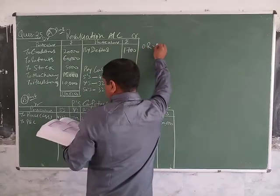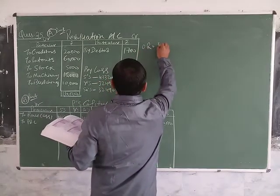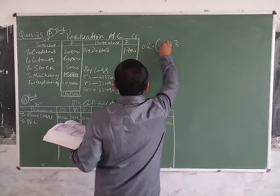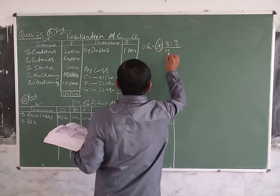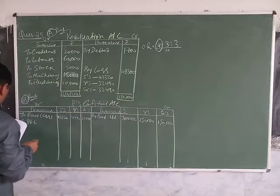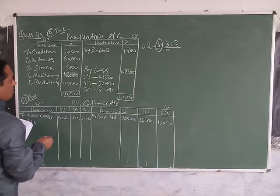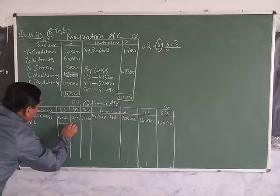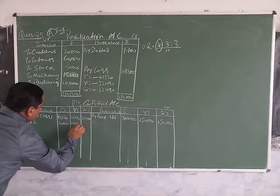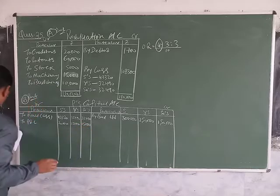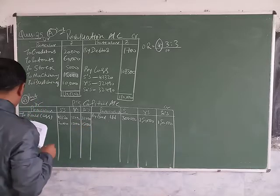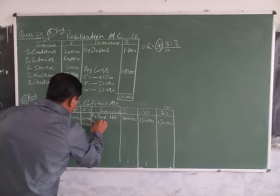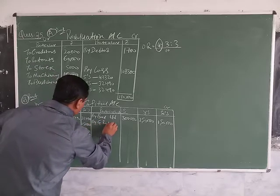The old ratio is 4:3:3. This partner is retired, so the total is 10. The 4/10 share means the distribution of 50,000 is: 4/10 gives 20,000, 3/10 gives 15,000, and 3/10 gives 15,000.